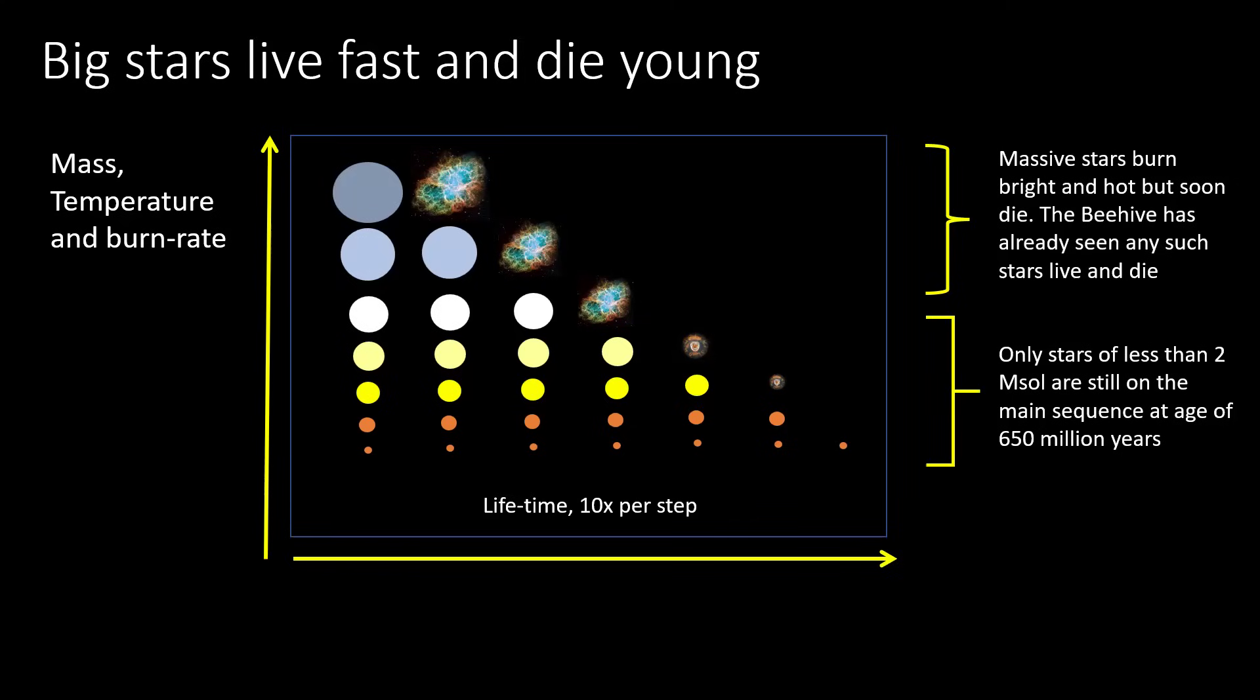Each step on the horizontal axis is a factor of 10 here - so 1 million in the top row, 10 million in the second row, a hundred million in the third row for the white stars roughly, and then we have the yellowy white, yellow, and red ones that live a billion, 10 billion, 100 billion, or even a trillion years. With an age of 650 million for the cluster, only the stars that are less than about double the mass of the sun are still around.